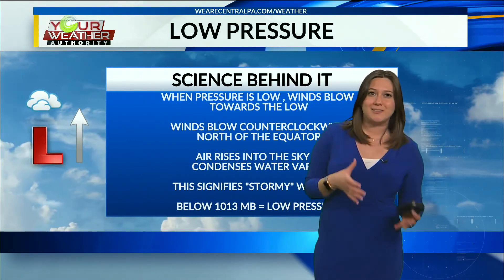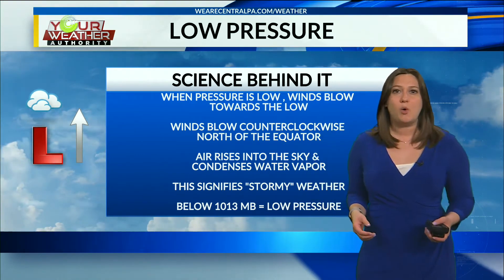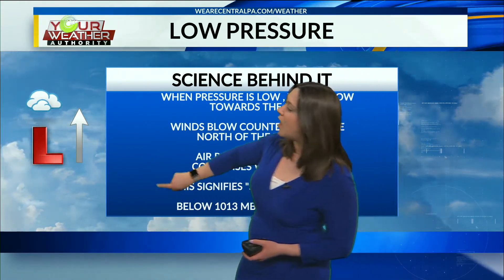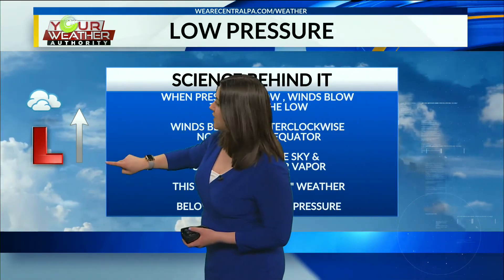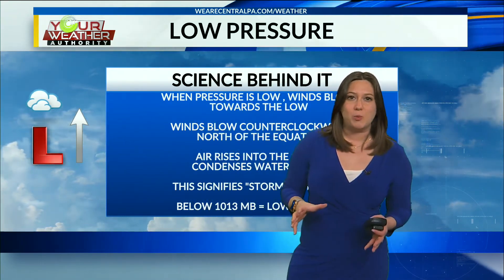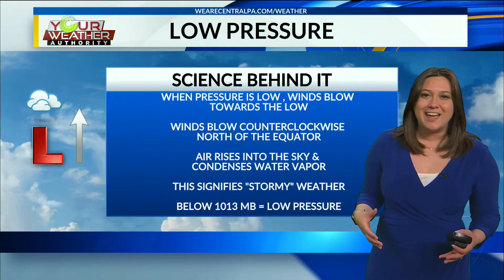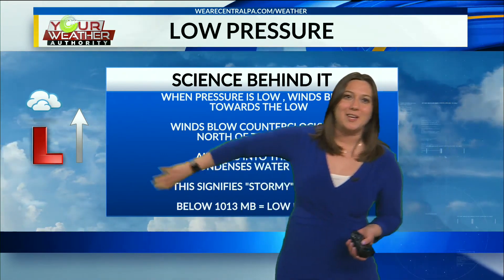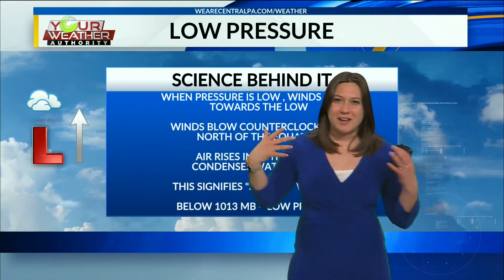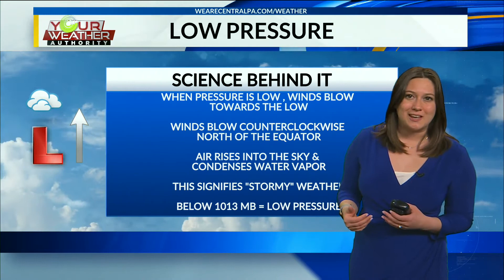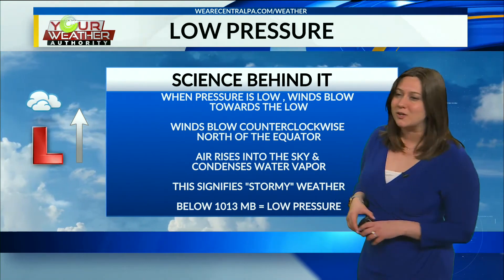With low pressure, it's basically the opposite. When pressure is low, winds blow towards the low pressure system, and winds blow counterclockwise in our northern hemisphere. You've got these winds converging and moving upwards in a low pressure system. As that air rises into the sky, it condenses water vapor and you get clouds — this signifies stormy weather. In the winter you would get snowfall, but in other seasons you would get rainfall. Below 1013 millibars equals low pressure.